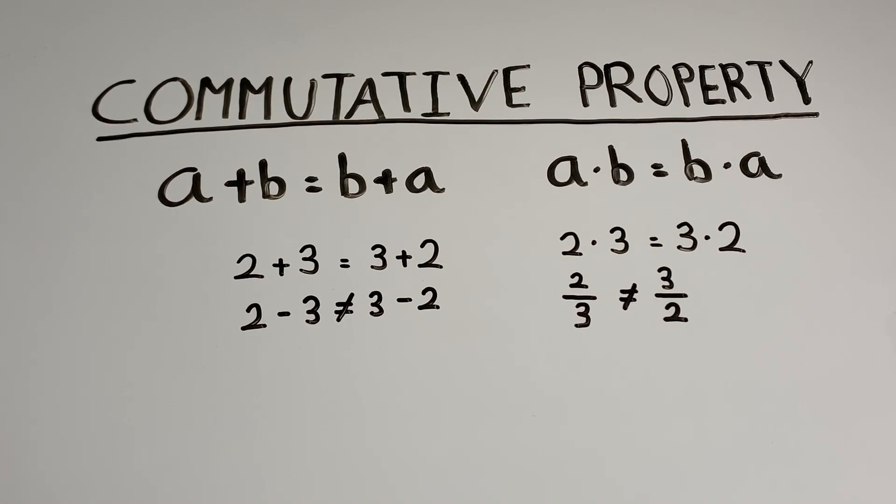Today let's talk about the commutative property. Addition and multiplication are commutative because we can reverse the order of two numbers being added or multiplied without changing their result.